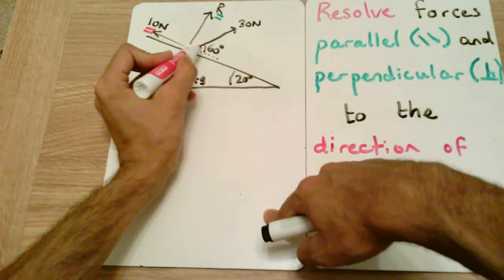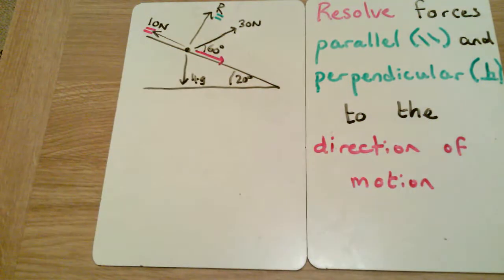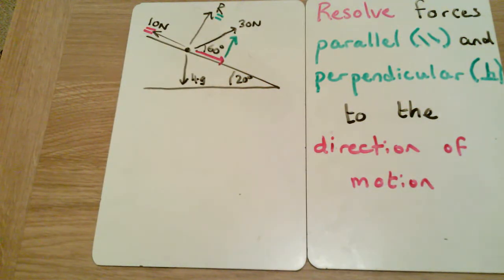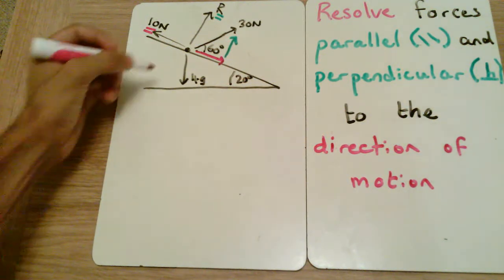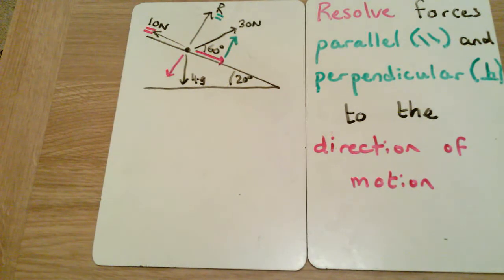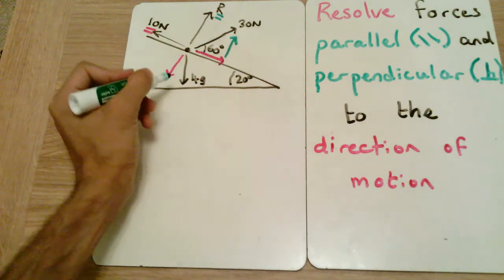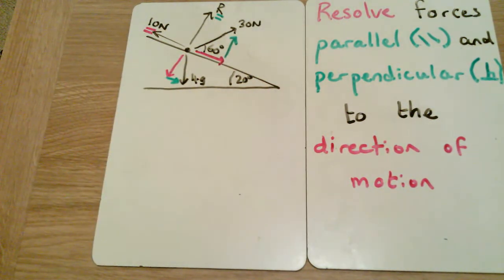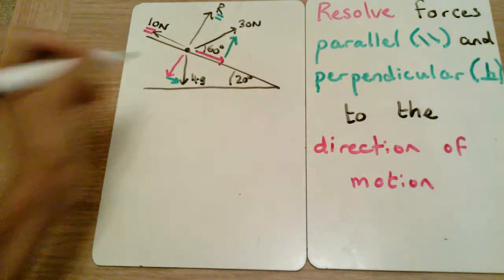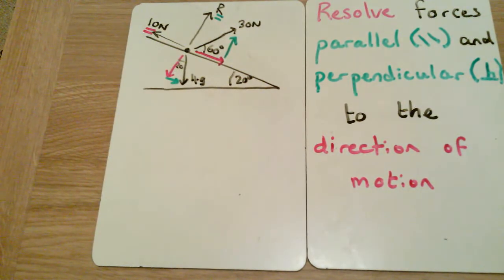I'll draw parallel forces in pink and perpendicular forces in green. The 10 N force is already parallel to the surface — it doesn't need resolving. The reaction force R is perpendicular — it doesn't need resolving. The 30 N force and 4g are not parallel or perpendicular to the surface, so those need to be resolved. For the 30 N force, I draw the parallel component and then perpendicular component to create a right angle triangle. I also drop a perpendicular from the 4g vector.